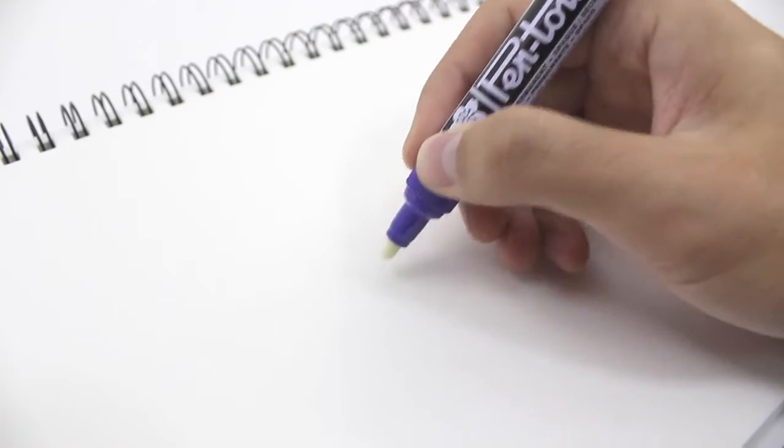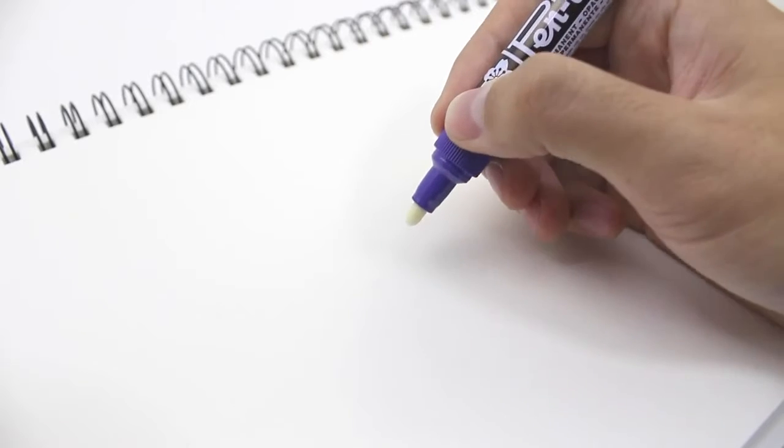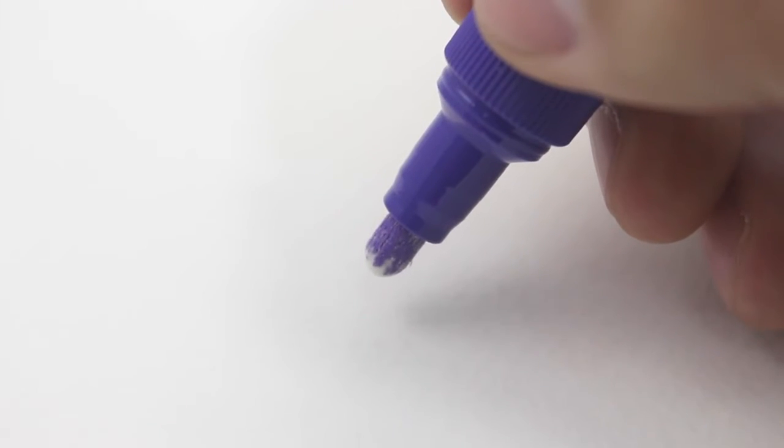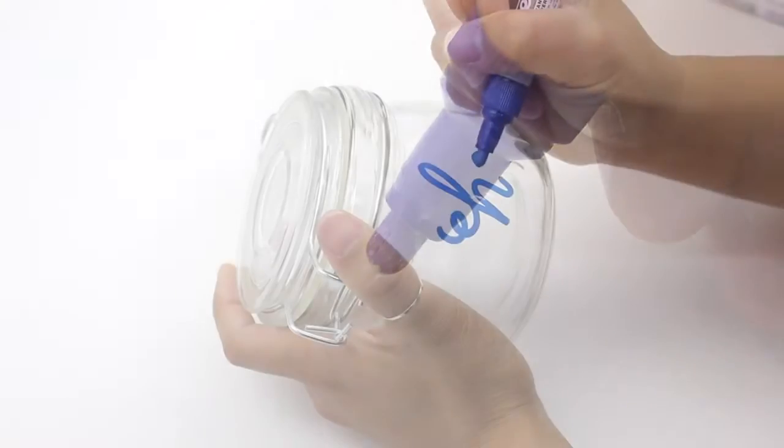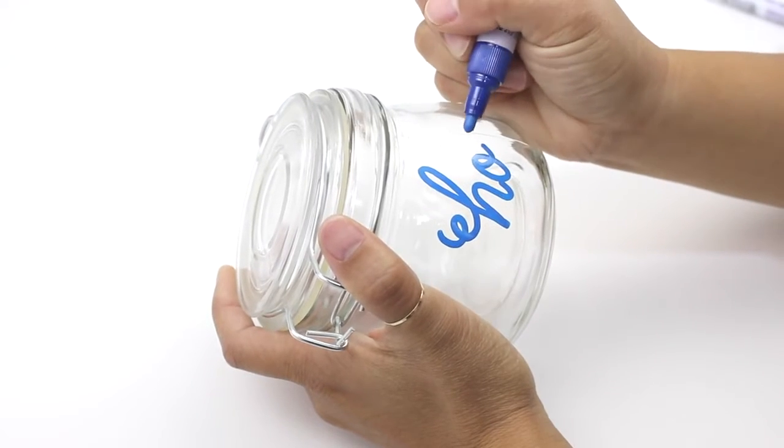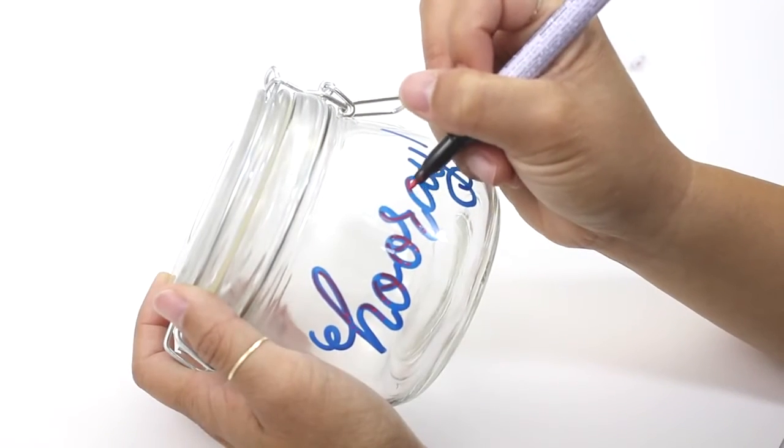The valve-action system allows you to reprime the marker by depressing the tip, allowing the ink to transfer from the chamber to the nib. The high-quality paint provides opaque and vibrant colors and is permanent on most surfaces.